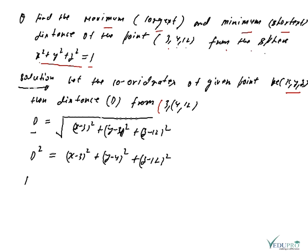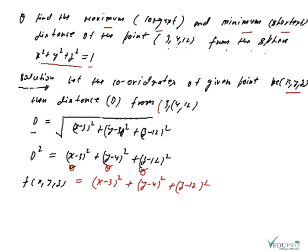We give d² another name — a new function f(x, y, z) — because this function involves x, y, and z. That's why it is a function of x, y, and z. So f(x, y, z) = (x−3)² + (y−4)² + (z−12)².